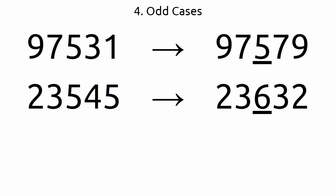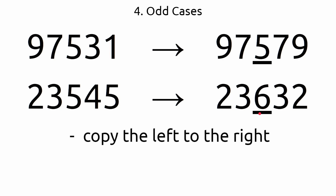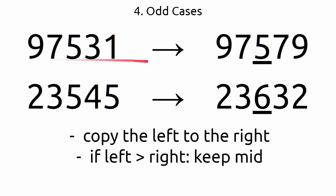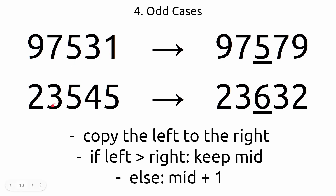Comparing the two cases side by side: 97531 becomes 97579, and 23545 becomes 23632. In the first case, 97 on the left is greater than 31 on the right, so we can just flip it over. In the second case, 23 is smaller than 45, meaning reversing it would give a smaller number, so we need to do middle plus one. The rule: if left is greater than right, keep mid as is; otherwise, do mid plus one.